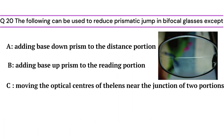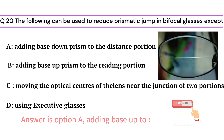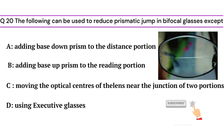Last question: The following can be used to reduce prismatic jump in bifocal glasses except: Option A - adding base down prism to the distance portion, Option B - adding base up prism to the reading section, Option C - moving the optical centers of the lens near the junction of the two portions, Option D - by using executive glasses. The wrong statement is Option A: adding base down prism to the distance portion. If you like to watch optometry videos, please subscribe to my channel. See you in the next video.